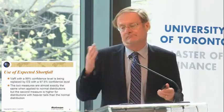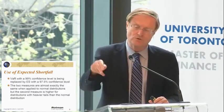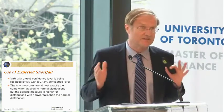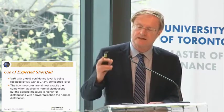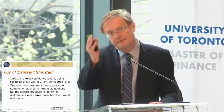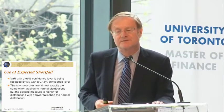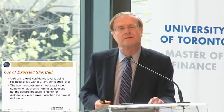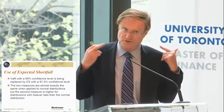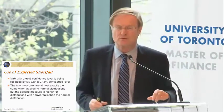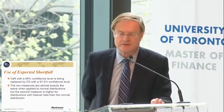It turns out that if you have a normal distribution, those two are almost exactly the same — you're going to get the same result. Value at risk with 99% is equivalent to expected shortfall with 97.5% if we're talking about normal distributions. If we've got distributions with fatter tails than the normal distribution, then you'll find the expected shortfall measure is higher.